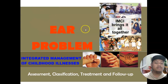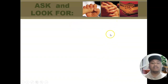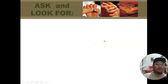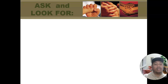Ear problem is one of the conditions being targeted and managed under Integrated Management of Childhood Illnesses for children below 5 years old. For assessment, we always start by determining if the visit is an initial visit or a follow-up visit. You assess ear problems after assessing the other main symptoms — so by this point, you've already assessed danger signs, the age of the child, and the other main symptoms.